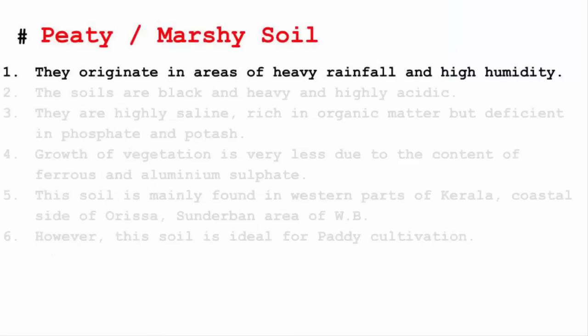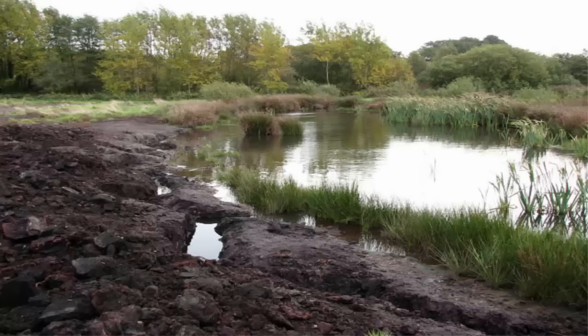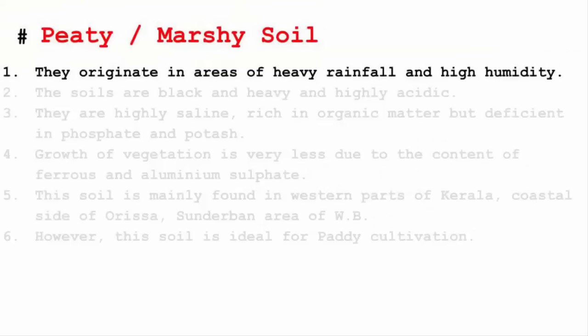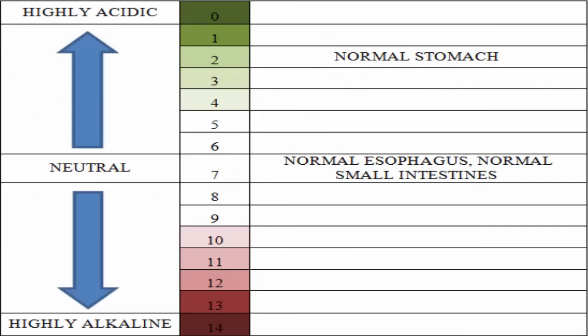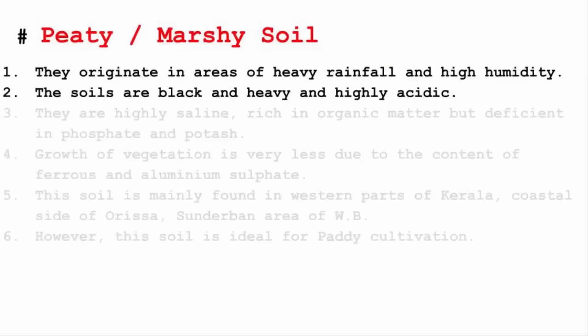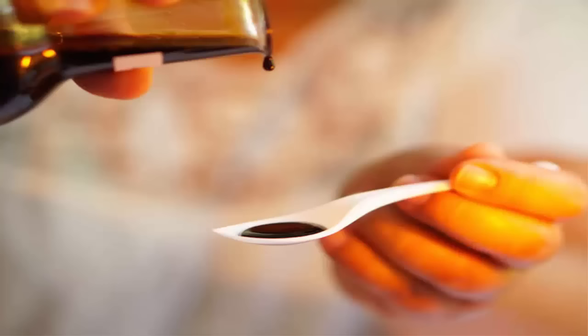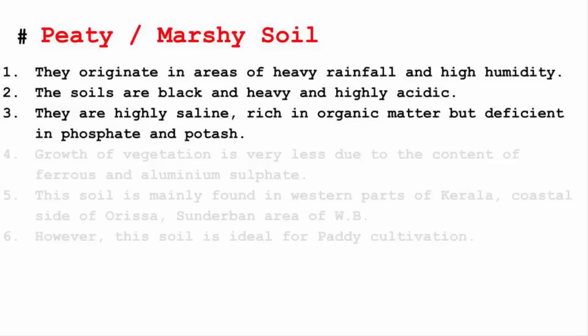The next type is peaty and marshy soil. Marshy means muddy, squashy, swampy — there should be a high quantity of water and humidity. They originate in areas of heavy rainfall and high humidity. The soils are black, heavy and highly acidic — meaning having a pH below 7, or in layman terms, sharp tasting or sour, like vinegar. They are highly saline and rich in organic matter but deficient in phosphate and potash.